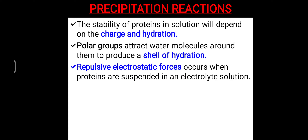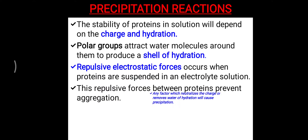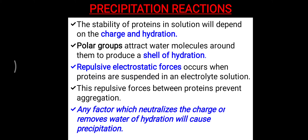The shell of hydration also leads to repulsive electrostatic forces that keep different protein molecules separated in solution. This repulsive force between proteins prevents aggregation — protein A and protein B remain separated because of these repulsive forces. Any factor which neutralizes the charge or removes the shell of hydration will lead to precipitation.